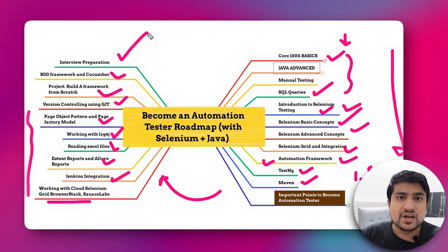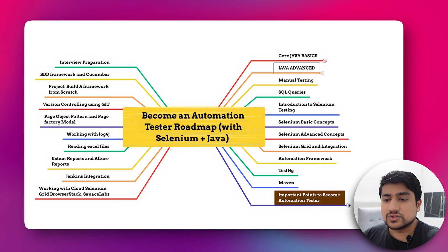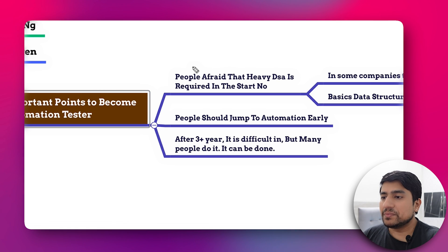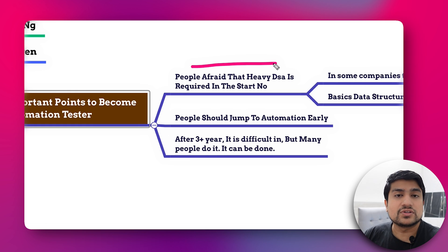Now start your interview preparation and begin giving automation testing interviews. This plan takes around two to four months depending on your effort — two hours or three hours a day can squeeze it to 1.5 to 2 months. Regarding data structures and algorithms (DSA): with my 10 years of experience, heavy DSA like tries or binary trees is not required for automation testing. Collections basics and hash tables are sufficient about 90–95% of the time.